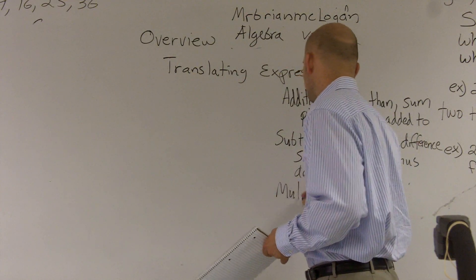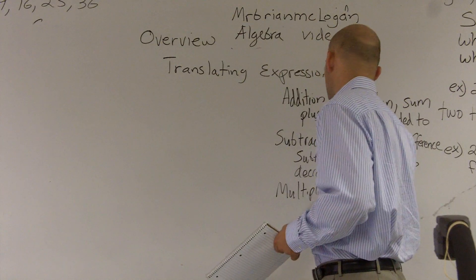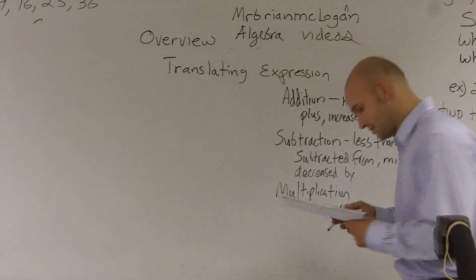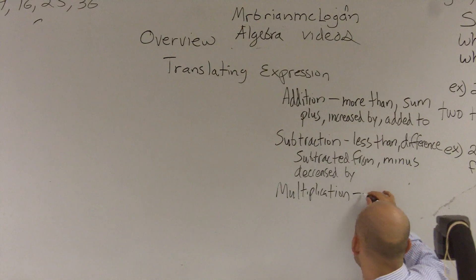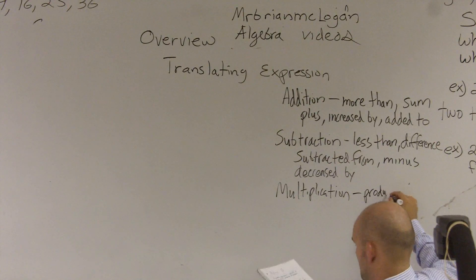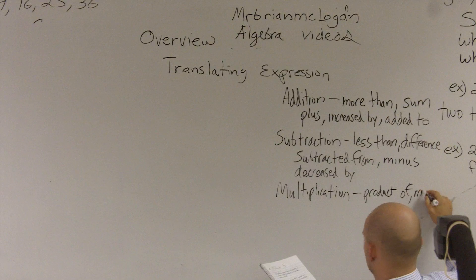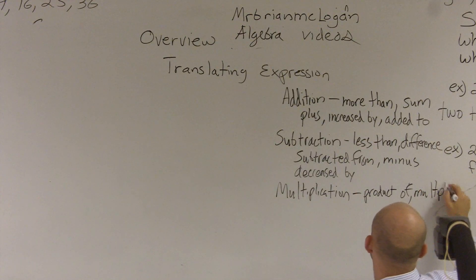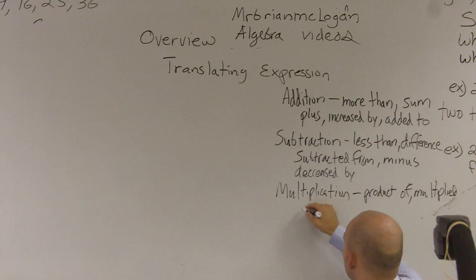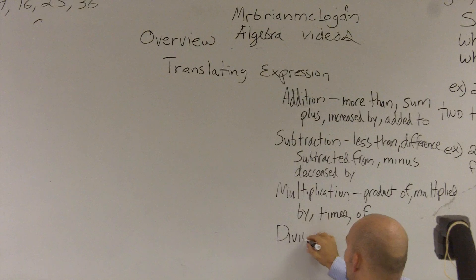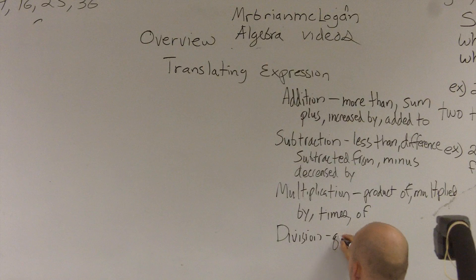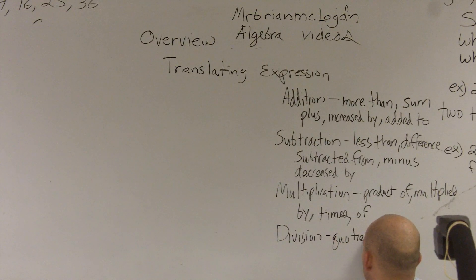Then we have multiplication. Multiplication is product of, multiplied by, times, and the single word of, and division. Division is quotient of and divided by.